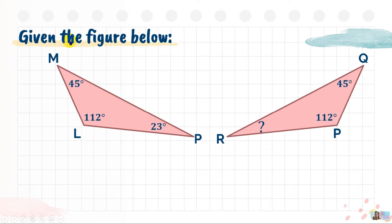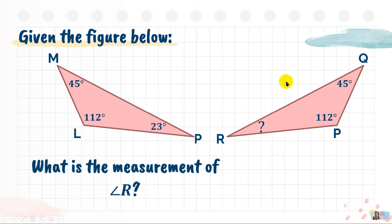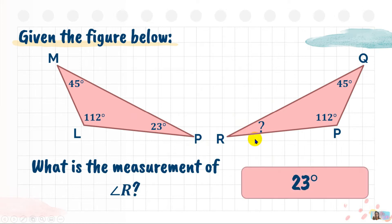Next, we have two triangles — triangle LMP and triangle PQR. What will be the measurement of angle R? Looking at the given measurements, these two triangles are congruent. As you can see, 112 and 112: angle L is congruent to angle P, and angle M is congruent to angle Q. Therefore, angle P is congruent to angle R, so angle R will also be 23 degrees. Remember, when you add the three angles of a triangle, they equal 180 degrees — that applies here too.